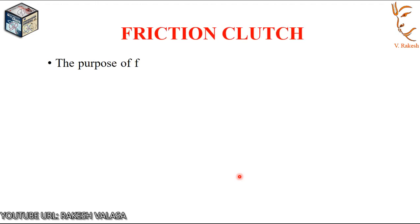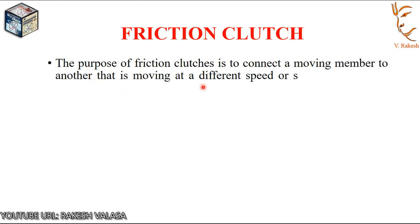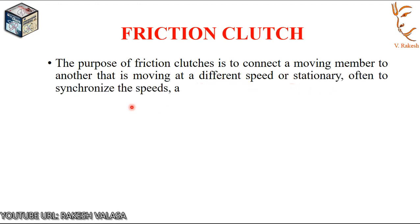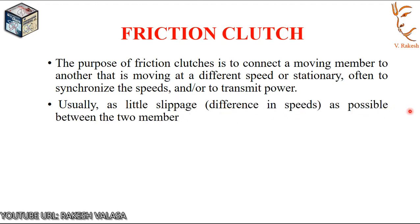The purpose of friction clutches is to connect a moving member to another, moving at a different speed or stationary, often to synchronize the speeds and to transmit power. Usually, as little slippage as possible — that is, difference in speeds — between the two members is desired.